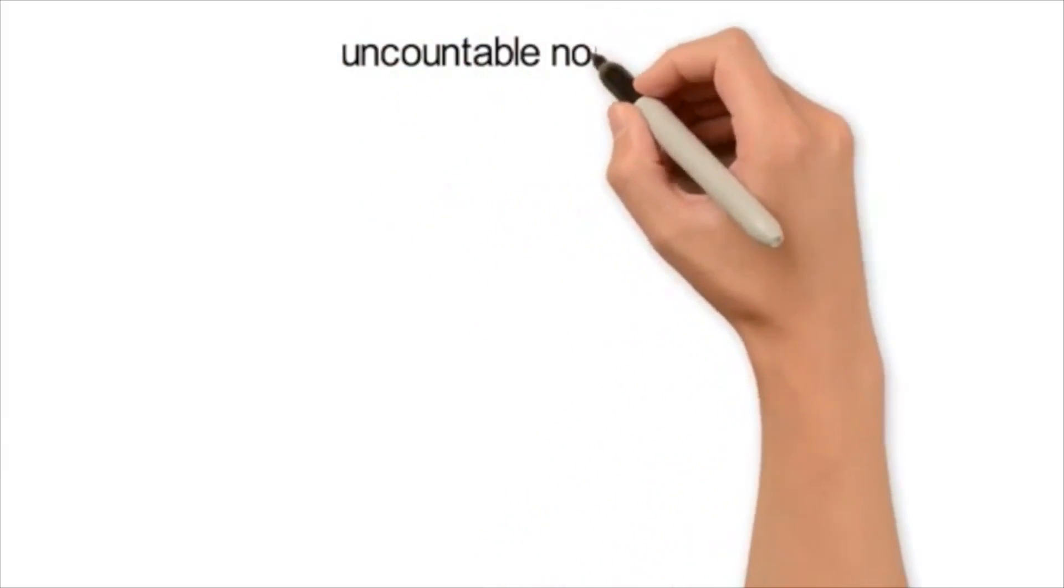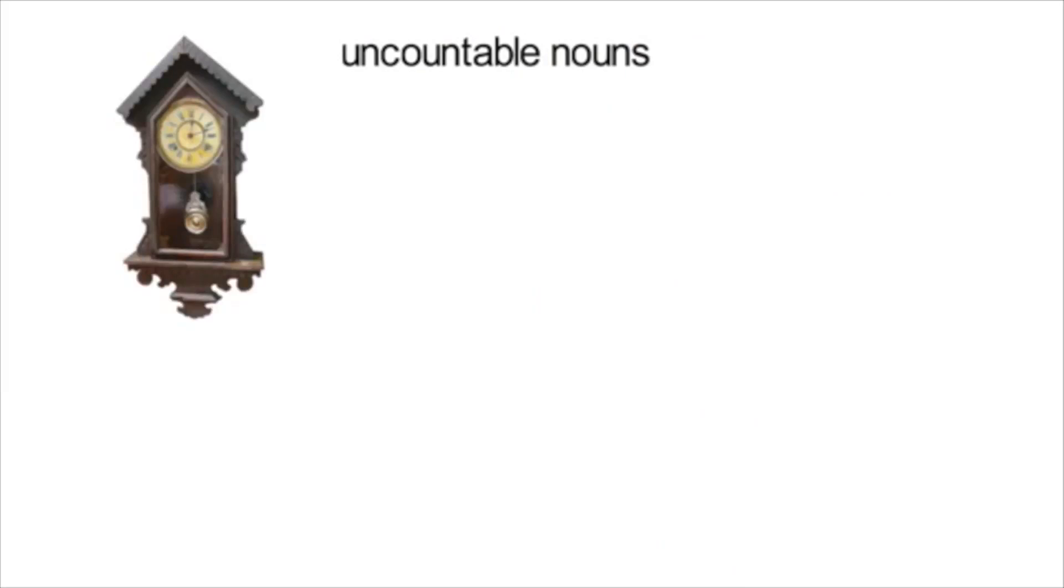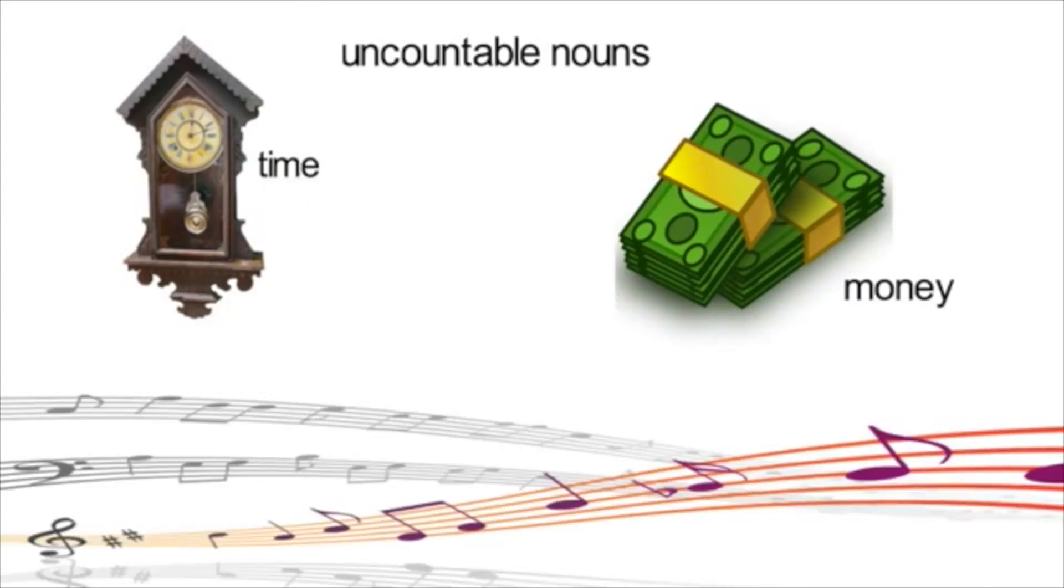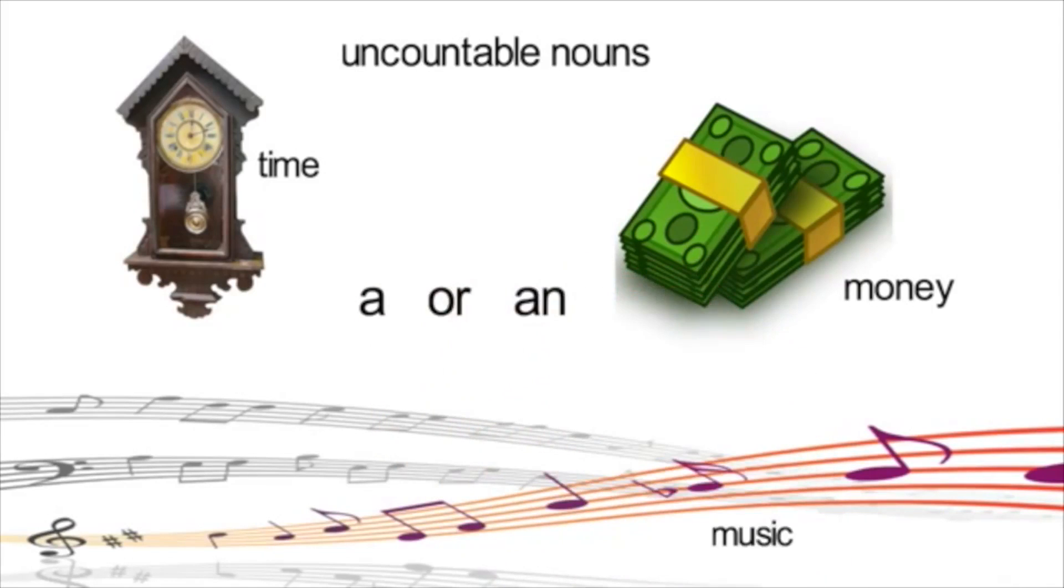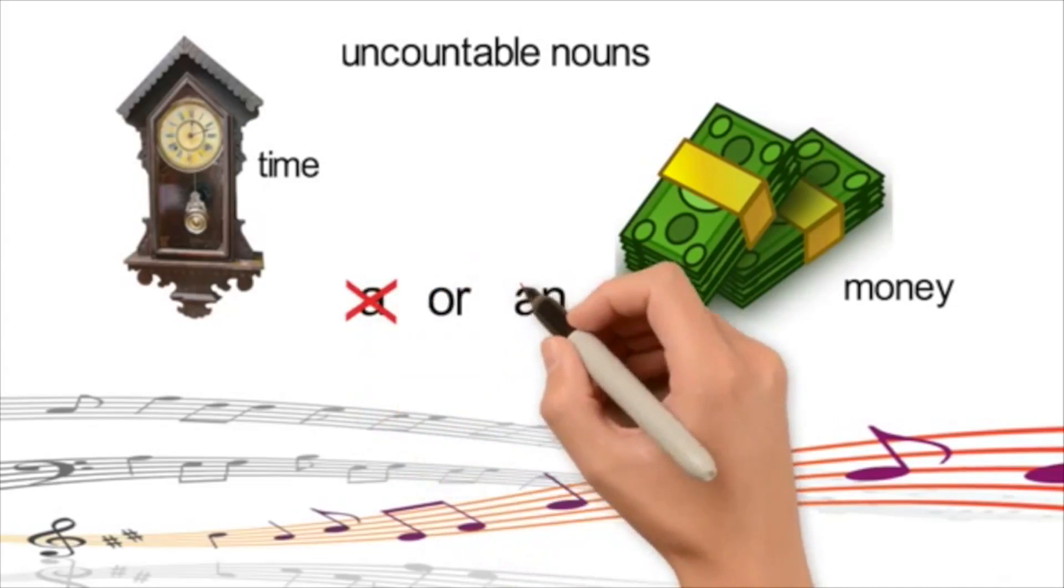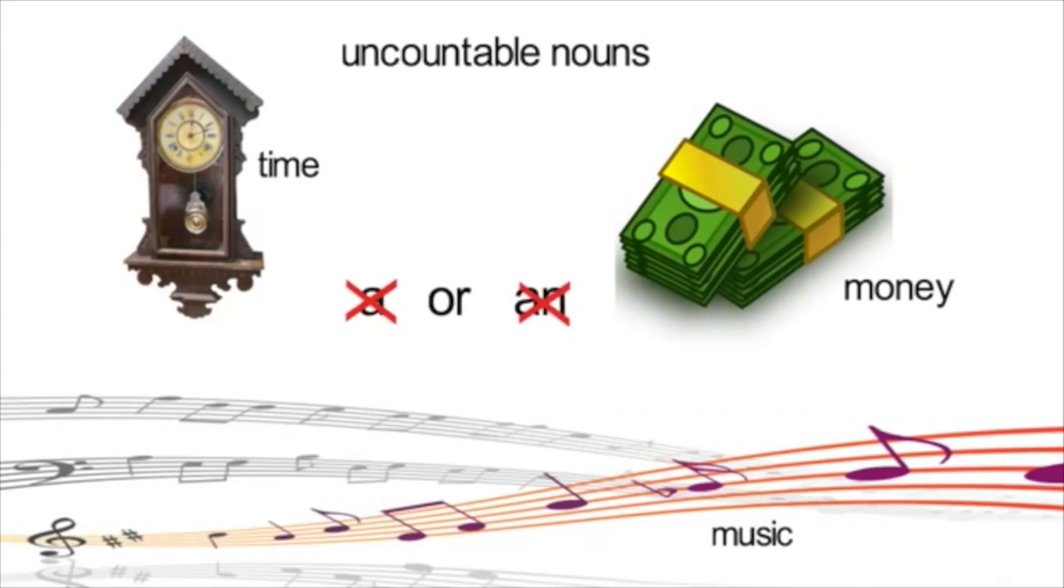Uncountable nouns are nouns that you can't count, such as time, money and music. You do not use a or an with uncountable nouns, but they act like singular nouns.